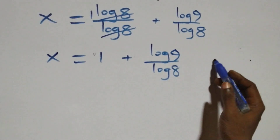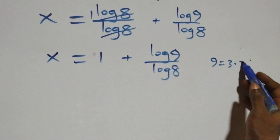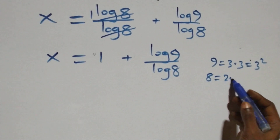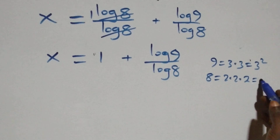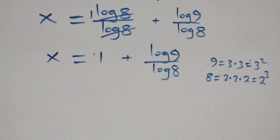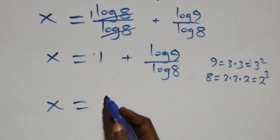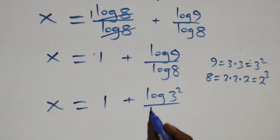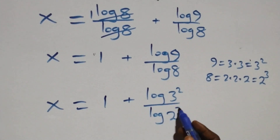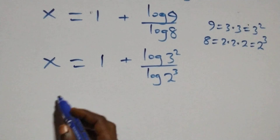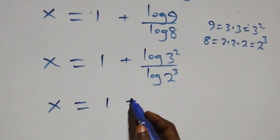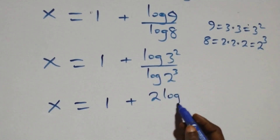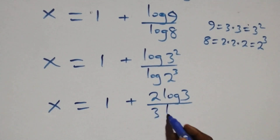Next, we can express 9 as 3 times 3, which is the same as 3 squared, and 8 as 2 times 2 times 2, which is 2 raised to the power 3. So x now equals 1 plus log 3 squared over log 2 raised to power 3. Applying the power rule of logarithms, the 2 comes down and the 3 comes down, giving x equals 1 plus 2 log 3 over 3 log 2.